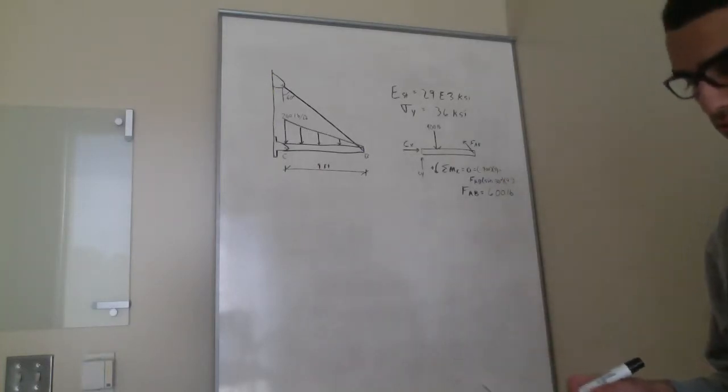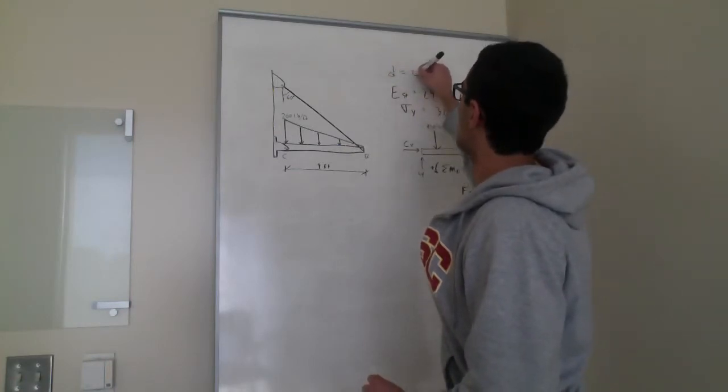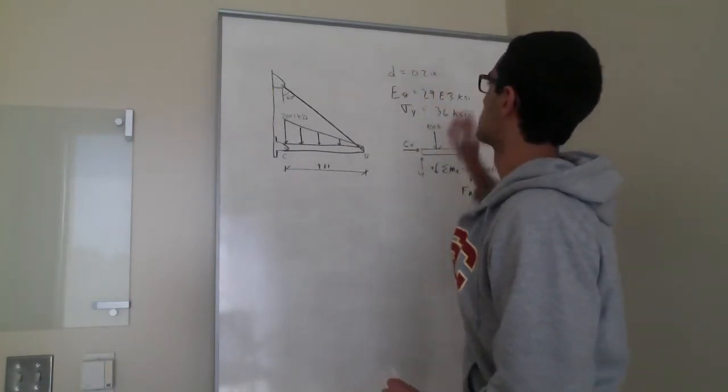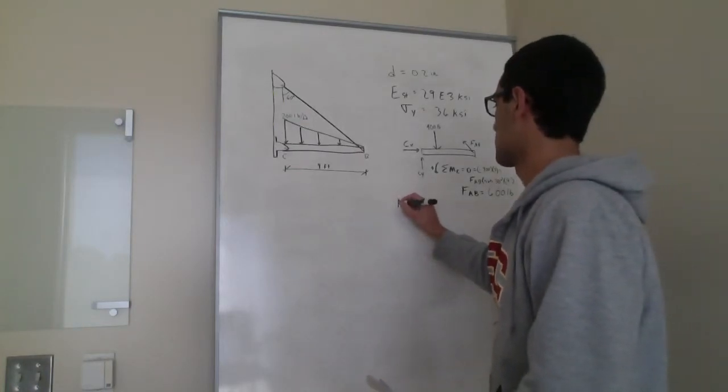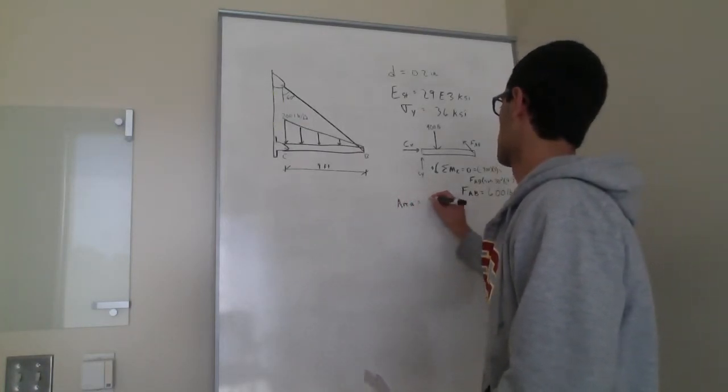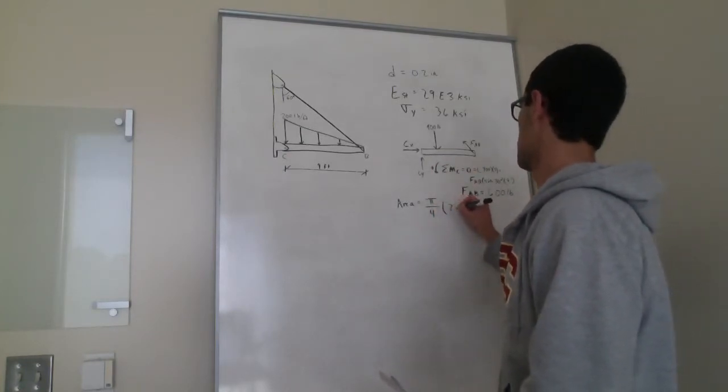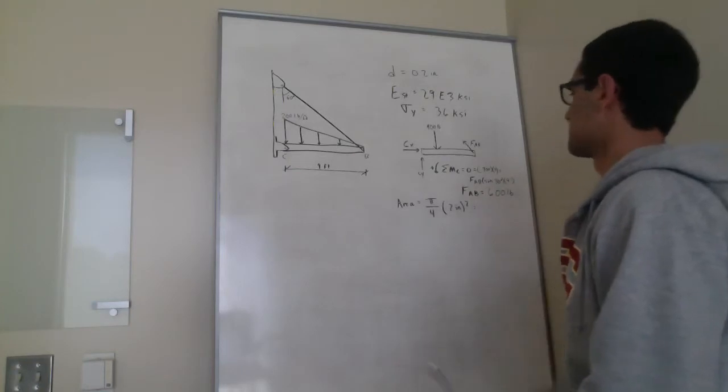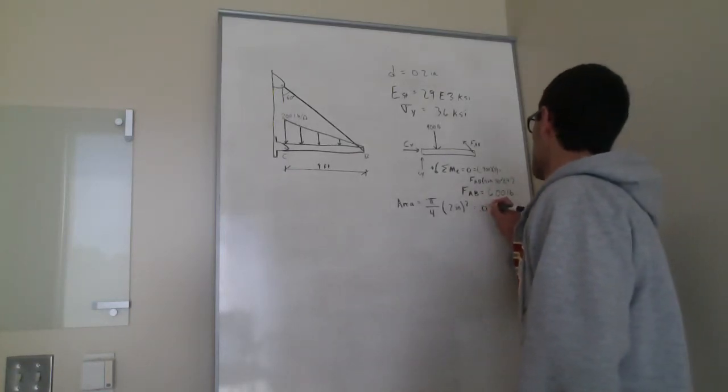So the next thing we need to do would be to calculate the area of the cable AB. We're given that the wire has a diameter of 0.2 inches. So we can use the equation area equals pi over 4 times diameter squared. So 0.2 inches squared. You get 0.0314 inches squared.